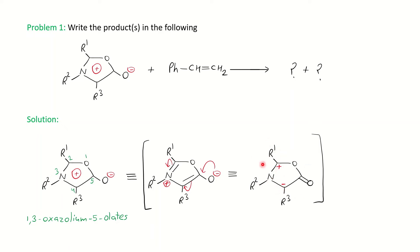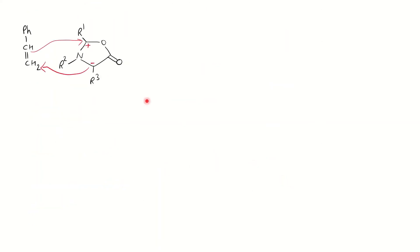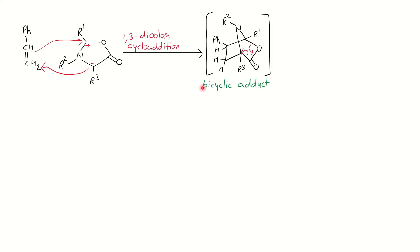This is our active site, ready for the 1,3-dipolar addition reaction with the alkene. The electrons from the negative end donate to the CH2, followed by the CH donating its electron to the positive carbon. You can see a six-membered ring is generated — 1, 2, 3, 4, 5, 6 — with nitrogen going to the bridgehead, giving you the bicyclic adduct.